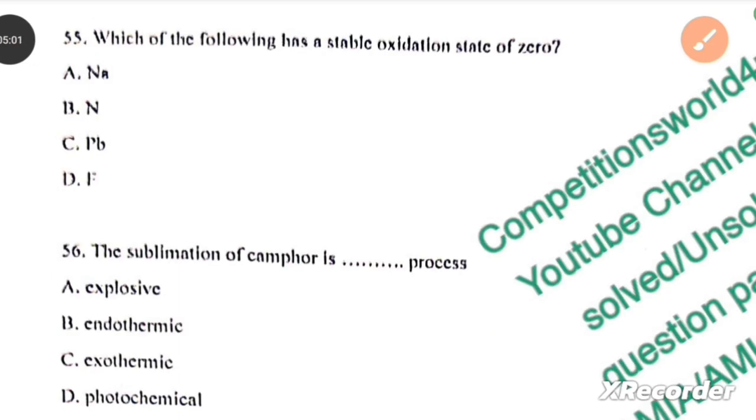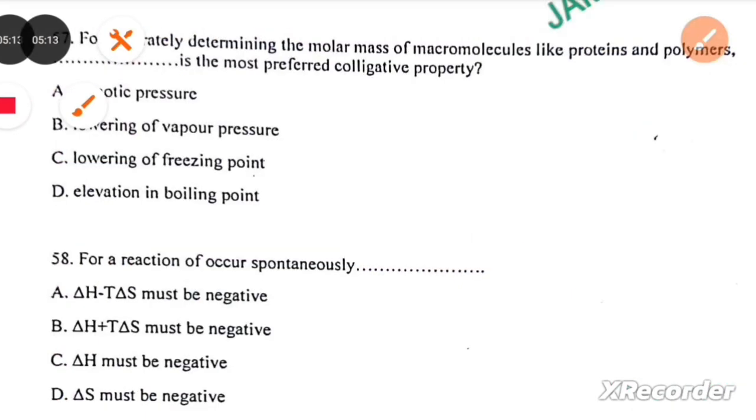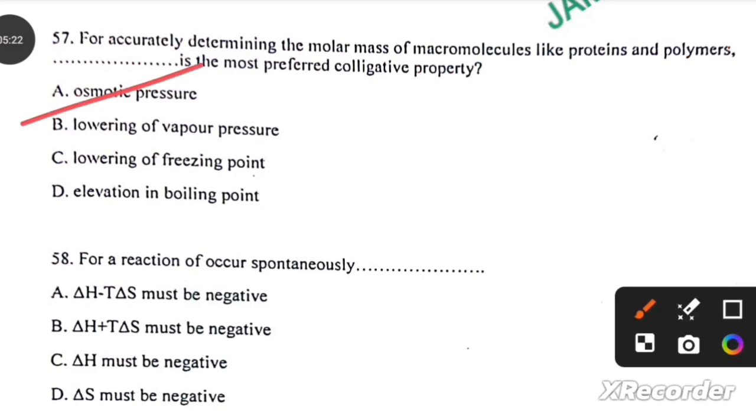Which of the following has a stable oxidation state of 0? Na. The sublimation of camphor is endothermic process. For accurately determining the molar mass of macromolecules like proteins and polymers, osmotic pressure is most preferred colligative property.